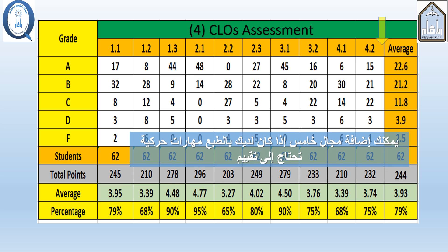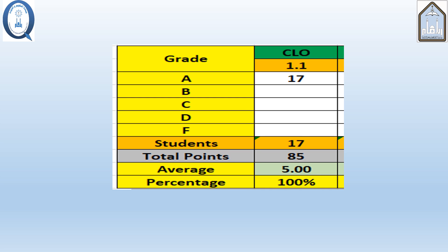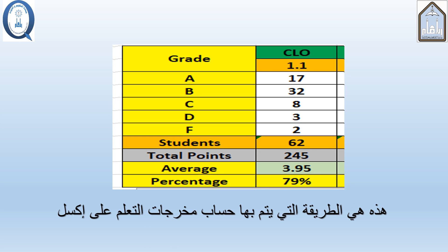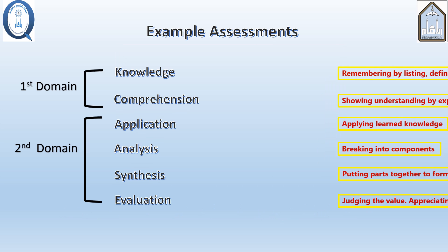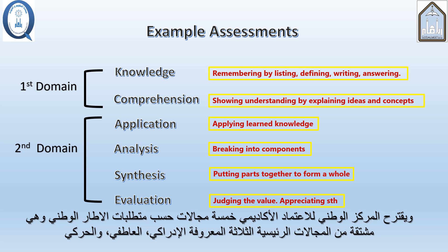You can add a fifth domain if your course really has psychomotor skills that need to be assessed. This is how the calculation is done in Excel. The instructor needs to understand what type of learning is assessed. The NCAA suggests five domains driven from the three major domains known as cognition, affective, and psychomotor.